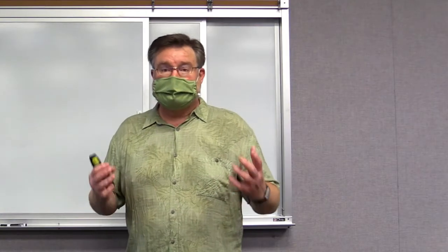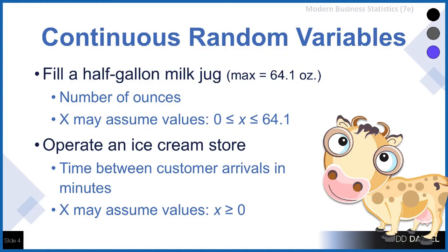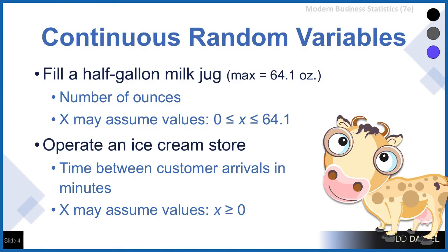Here's some examples of these continuous random variables for a continuous probability distribution. If we're looking at a half gallon of milk, the maximum that might be put into that half gallon would be 64.1 ounces, and so the number of ounces in the container might take on any value between zero and 64.1. We could even go out to decimal places if we needed to. Or if you're operating an ice cream store, the time between customer arrivals in minutes, and this x value can assume any value greater than or equal to zero. With discrete probability distributions the values always take on a whole number or integer value.